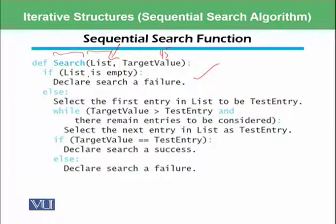Else if list is not empty then select the first entry in the list. As we discussed, we have selected 12, the first one. And while 45 is greater than 12.